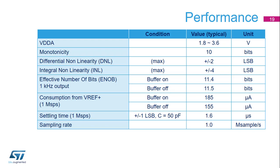The following table shows some performance parameters for the digital to analog converter. The DAC can work between 1.8 and 3.6 volts. When the DAC output buffer is on or the DAC out pin is connected, the minimum VDDA voltage value is 1.8 volts. 10-bit monotonicity is guaranteed. When operating at 1 mega sample per second, power consumption is 185 microamps with the buffer enabled and 155 microamps with the buffer disabled. By using sample and hold mode, the current consumption can be drastically reduced — less than 1 microamp is possible depending on conditions and hold capacitor characteristics.